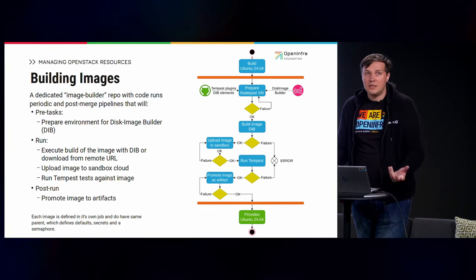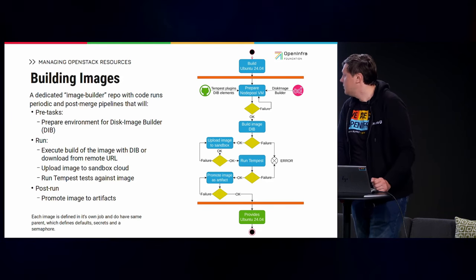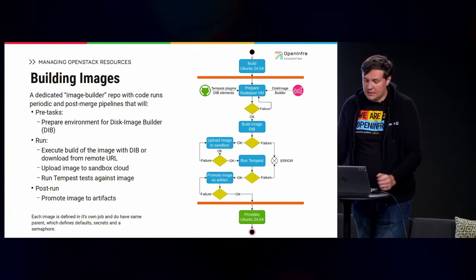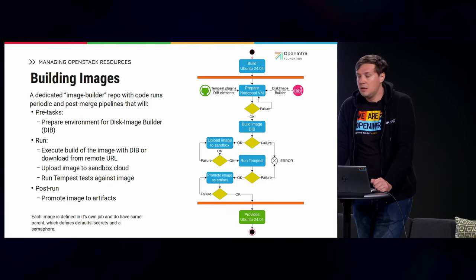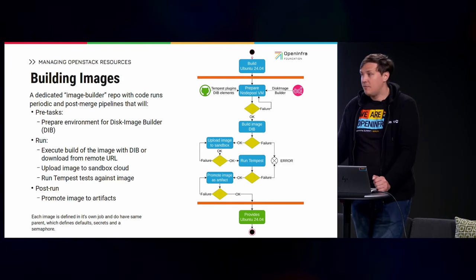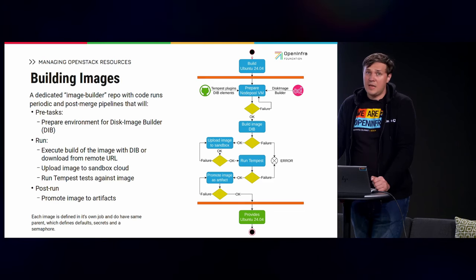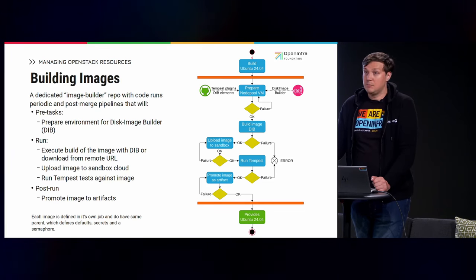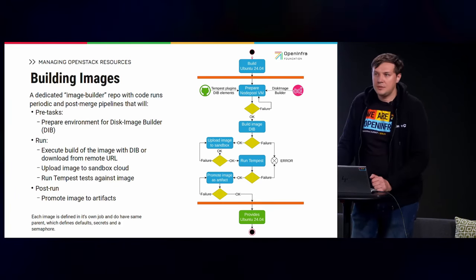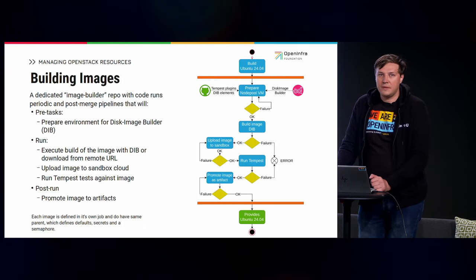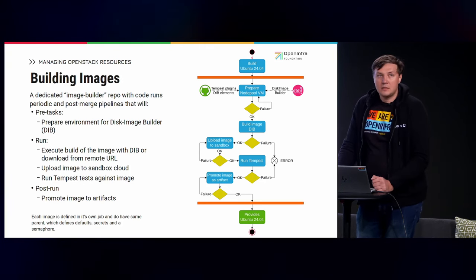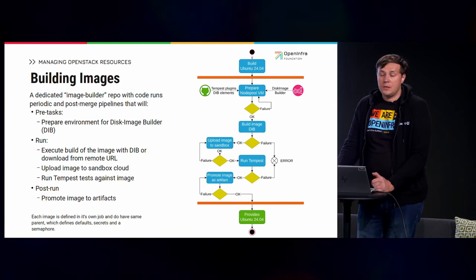Job runtime looks relatively simple: DiskImageBuilder is launched with arguments we supply to the Zuul job. Then the resulting image, which hopefully will be built without failure, is uploaded to a staging environment. Once it is in the staging environment, we prepare a Tempest config and execute Tempest tests, which create a VM from this image. It verifies that the VM state is as required — that you can SSH into it, you have required metadata set, you don't have any packages to update, and so on.